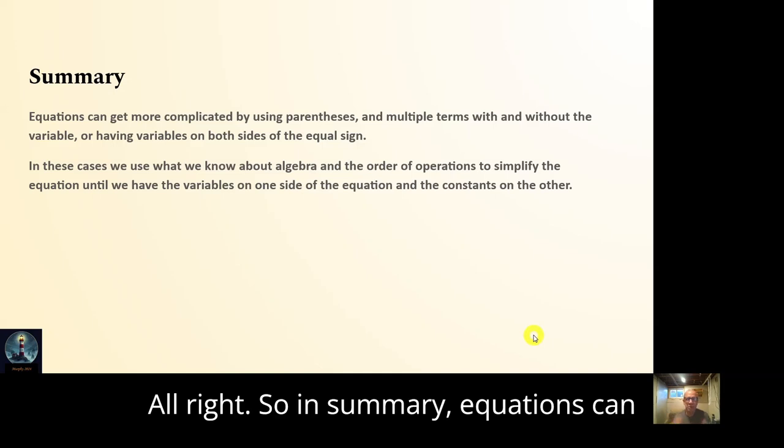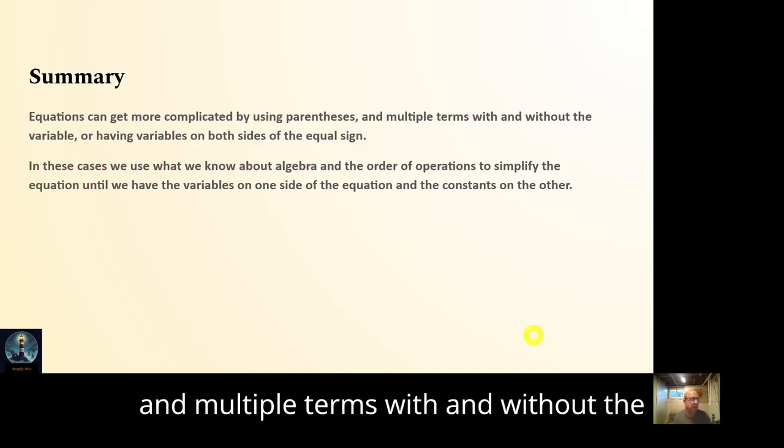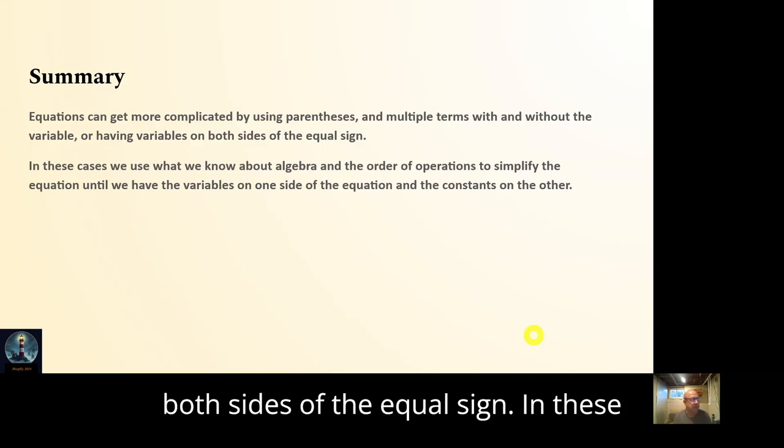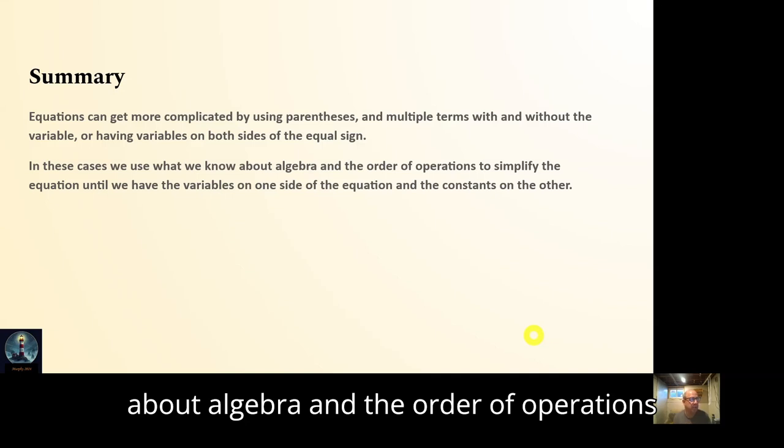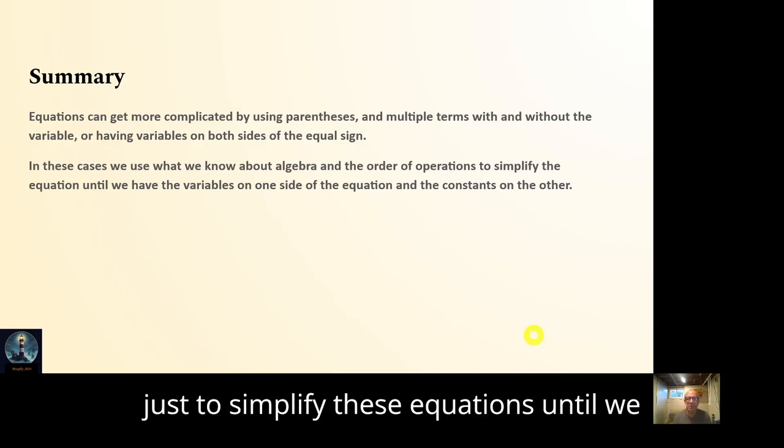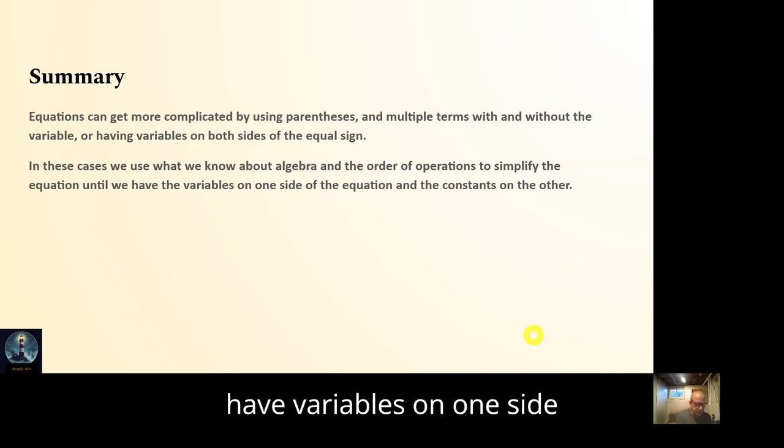In summary, equations can get more complicated by using parentheses and multiple terms with and without the variable and having variables on both sides of the equal sign. In these cases, we just have to use what we know about algebra and the order of operations, just to simplify these equations until we have variables on one side and numbers on the other. That's it.